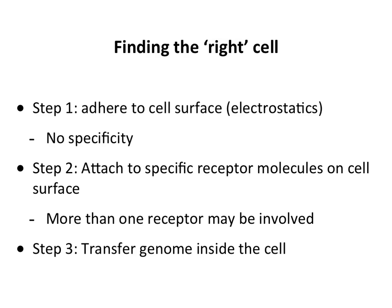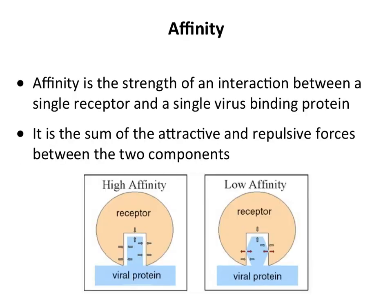When discussing virus-receptor interactions, we need to understand affinity and avidity. Affinity is the strength of interaction between a ligand and its receptor — in this case, the ligand is the virus and the receptor is on the cell surface. It's the sum of all attractive and repulsive forces on the virion and receptor. High-affinity interactions occur when viral proteins and receptor surfaces have many amino acids that form non-covalent interactions; low affinity results from poor fit and repulsions.